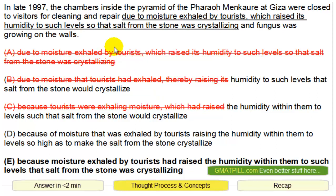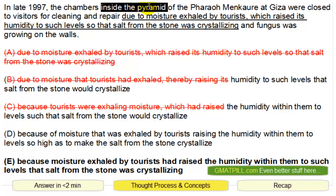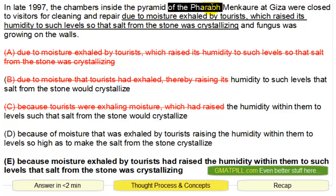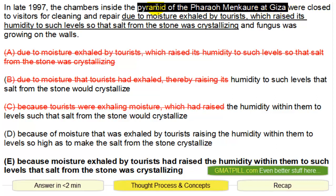When you read this sentence, don't waste time on the parts that aren't underlined. 'The chambers inside the pyramid' — that's a descriptive phrase, it's fluff. Inside the pyramid of this thing at Giza — we have three prepositional descriptive phrases you do not need to read; they're not the core of the sentence. The core of the sentence is: in late 97, the chambers were closed.